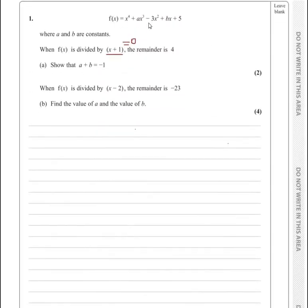The given question is on remainder theorem. There is a function f(x) = x^4 + ax^3 - 3x^2 + bx + 5, where a and b are constants. When f(x) is divided by (x + 1), the remainder is 4. Show that a + b = -1.